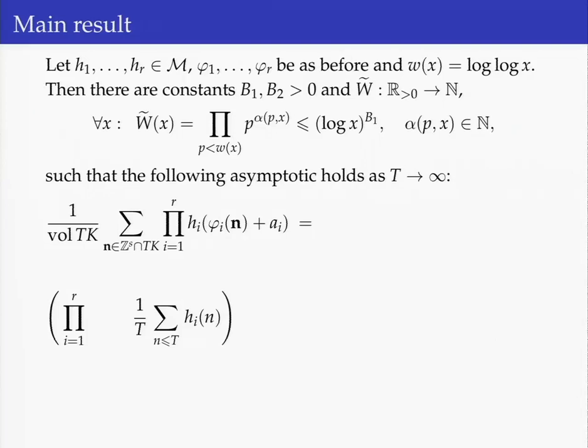This W-tilde of x is fairly small — bounded by log x to the B_1, where B_1 is one of the constants — and it has the property that it is composed only of small primes: it is a product of powers of primes running only up to log log x. The result then says the following: this linear correlation of functions from our class M, properly normalized, can be evaluated asymptotically.